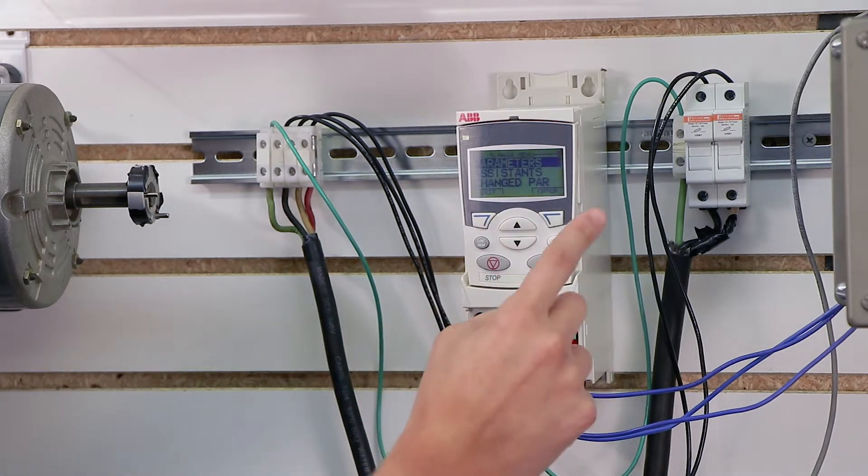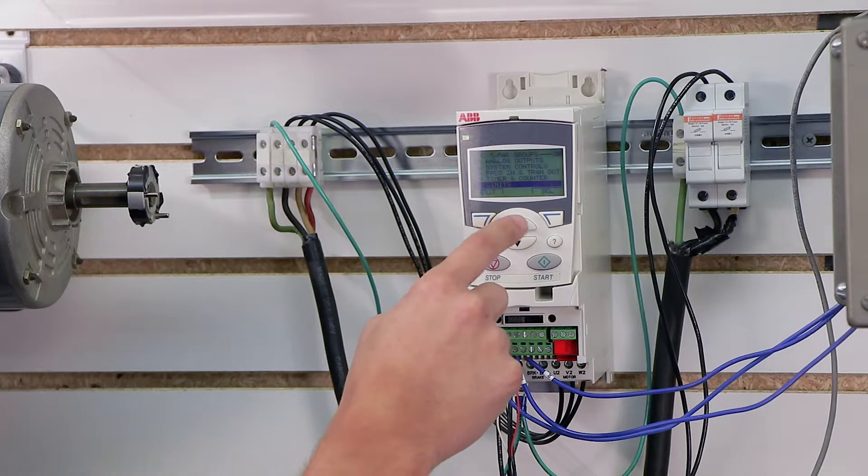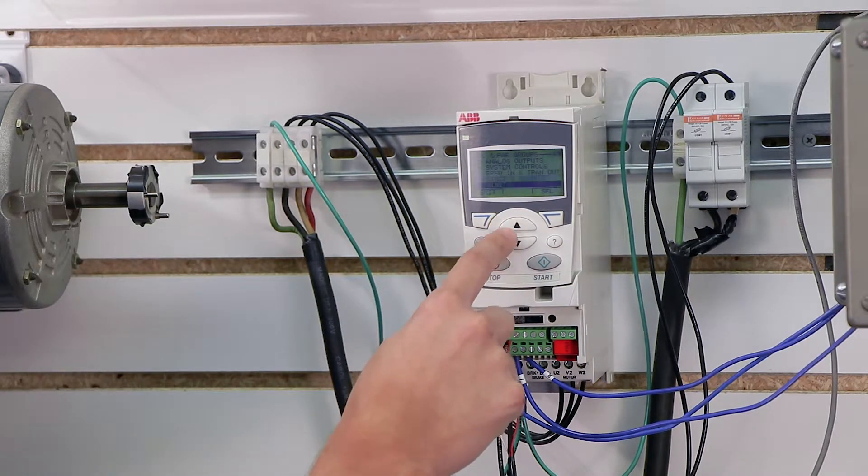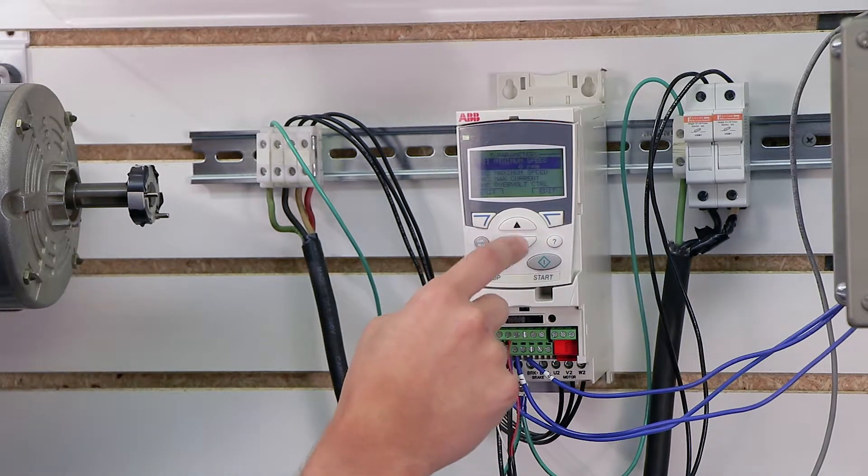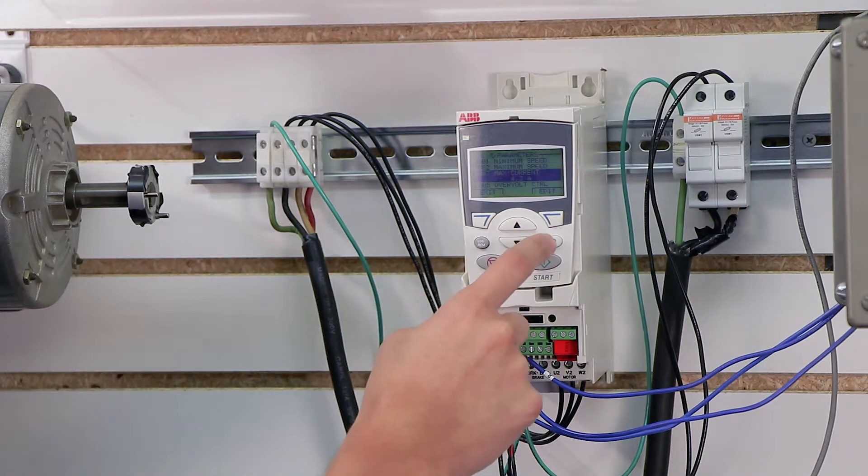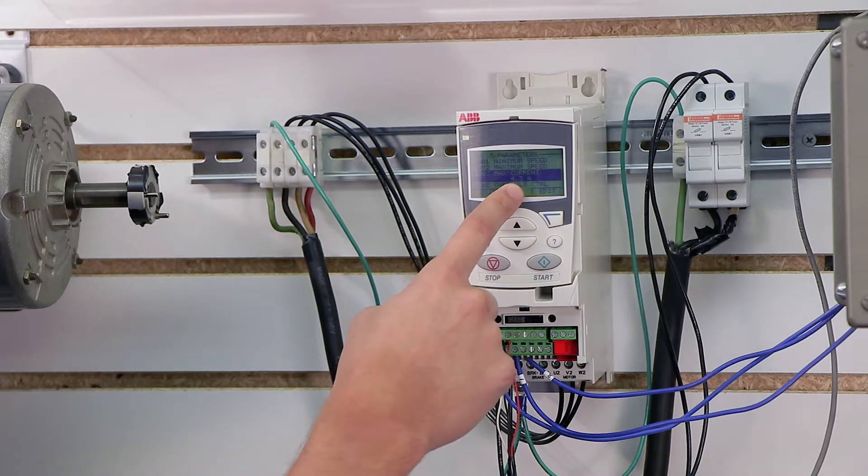Now, to do that, just press Menu and make sure it's on Parameters and click Enter. And then we go down to our Limits section, which is Parameter Group 20. We click Select. We scroll down to Max Current. And as you can see on my drive, it says 4.3 amps, which is a lot of current because I have a 2.4 amp motor.